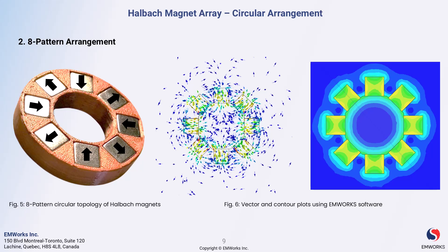Enhancing the magnetic field strength here can lead to significant improvements in efficiency and reduced energy losses. The tighter configuration allows for greater magnetic coupling and can improve torque output, making this design highly effective for high-performance applications.